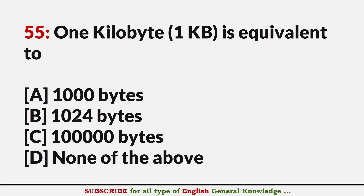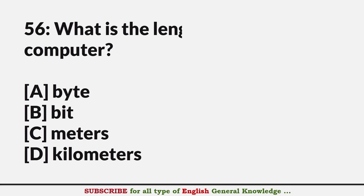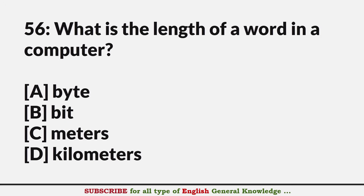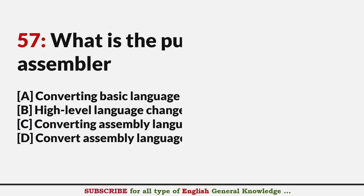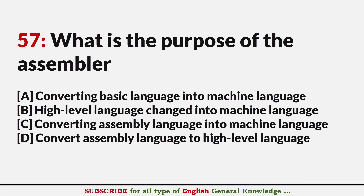1 KB is equal to? Answer B: 1024 bytes. What is the smallest unit of data in a computer? Answer B: Bit. What is the purpose of the assembler? Answer C: Converting assembly language into machine language.